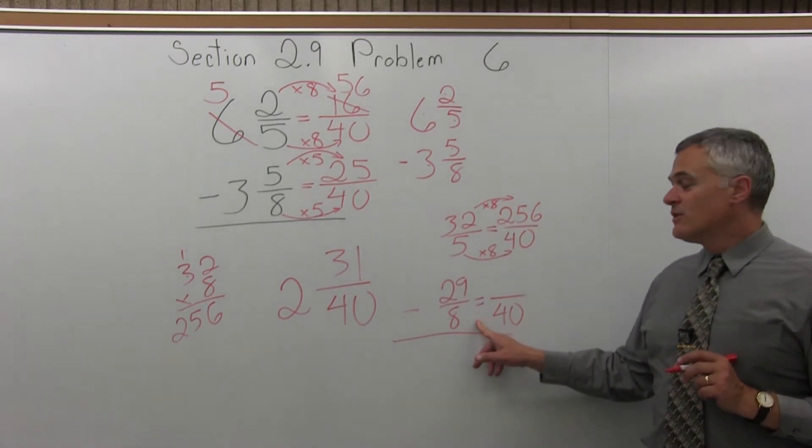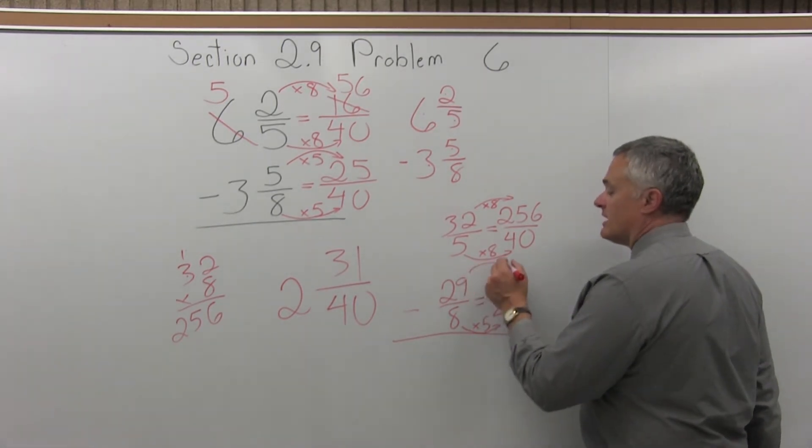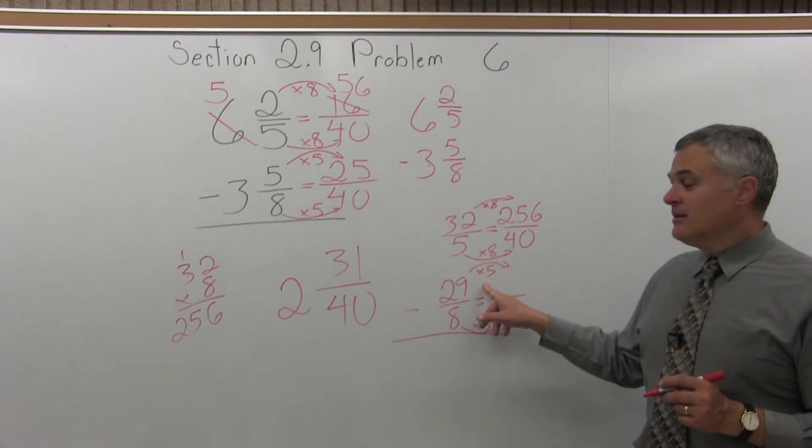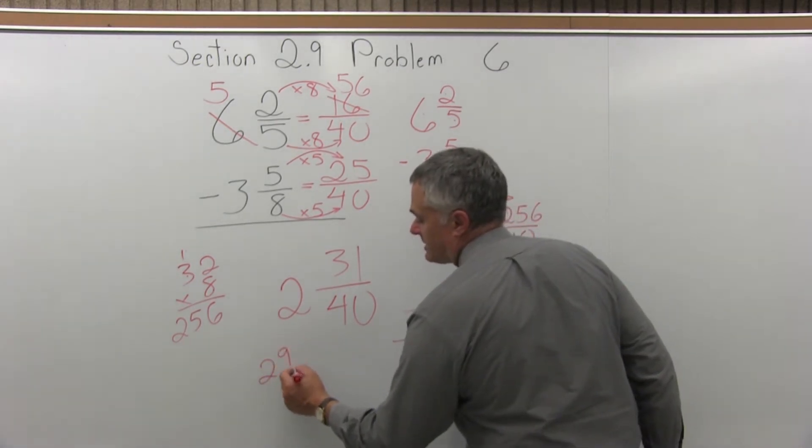Now do the same thing for the lower fraction. 8 times some number was 40, 8 times 5 is 40. So the numerator is times the same amount, 29 times 5. That's tougher to do in your head. If you see it, great, and if you don't, just go off to the side.